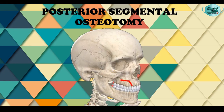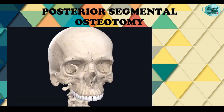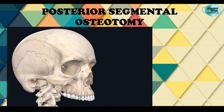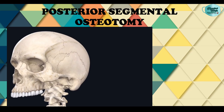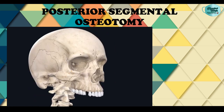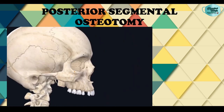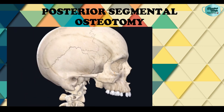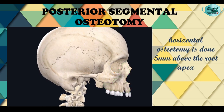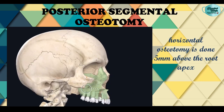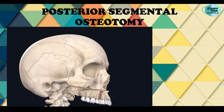For the surgical technique of posterior segmental osteotomy, a horizontal incision is made in the buccal sulcus from the canine region to the first molar region. The premolar tooth may need to be extracted to provide space for the anterior osteotomy cut. A vertical bone cut is made through the socket of the extracted tooth, followed by a horizontal bone cut from the extracted premolar anteriorly, extending to the tuberosity region posteriorly. This horizontal cut is approximately 5 mm above the root apices to prevent damage to the tooth roots.